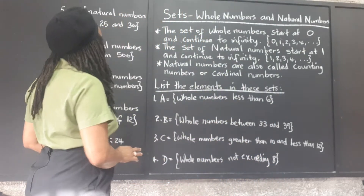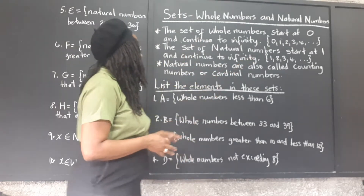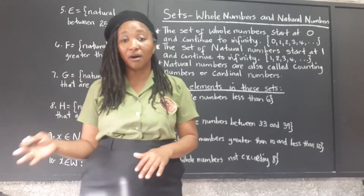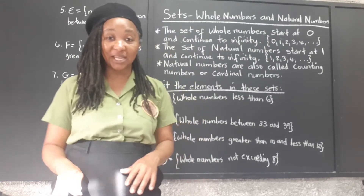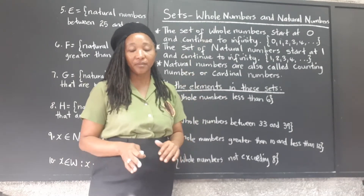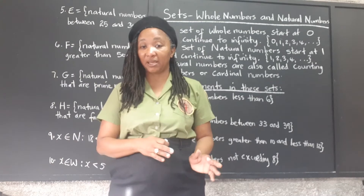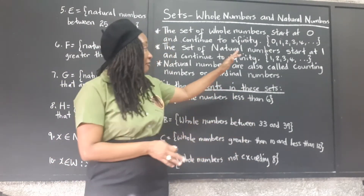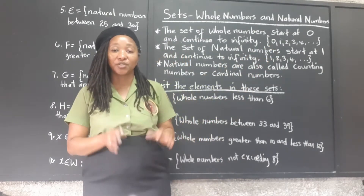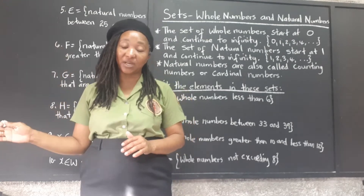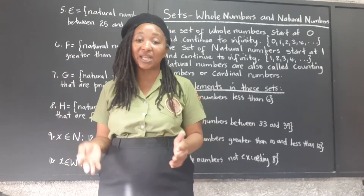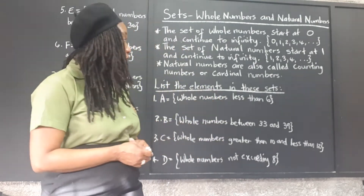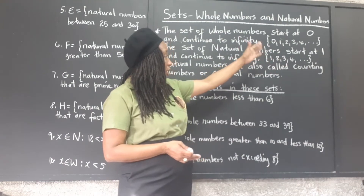The set of whole numbers starts at zero and continues to infinity. Infinity means it goes on and on, never ending. This particular set has a beginning but there is no end to it — so it's an infinite set. The first whole number is zero. Whole numbers keep going up by one: zero, one, two, three, four, and so on. The ellipses tell us that the set is infinite and continues forever.